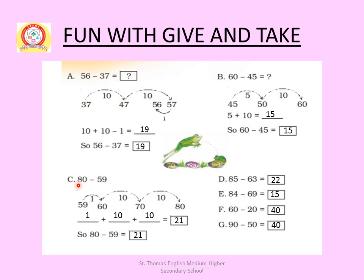Next: 80 minus 59. Start counting from 59 and forward count up to 80. From 59 to 60 in 1 step, then 60 to 70 in 10 steps, then 70 to 80 in 10 steps. So 1 plus 10 plus 10 equals 21. Therefore 80 minus 59 equals 21.